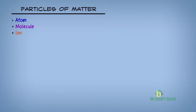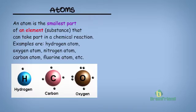Particles of matter — they are atom, molecule, and ion. Let us quickly take a look at each of these particles. What is an atom? An atom is the smallest part of an element or a substance that can take part in a chemical reaction.